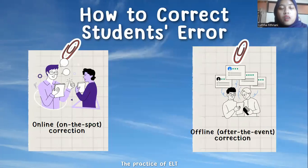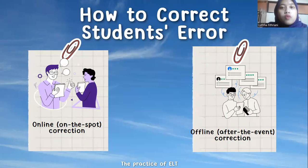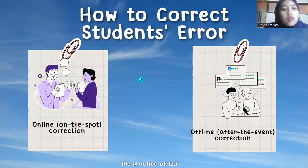If the student makes errors or mistakes, the teacher has a responsibility to give the students feedback and correction. How to correct student errors, especially in speaking — there are two techniques the teacher can use: on-the-spot correction or after-the-event correction.